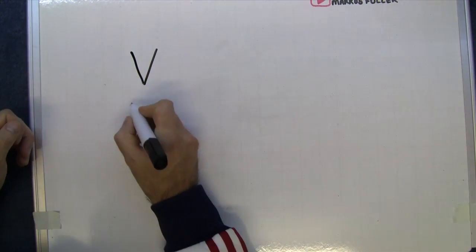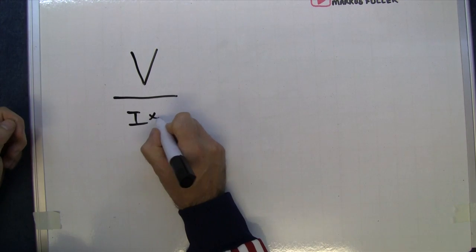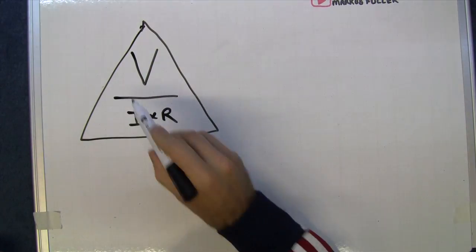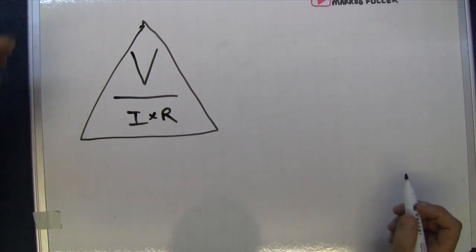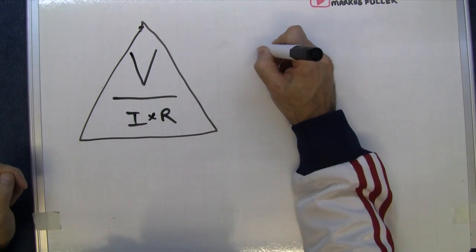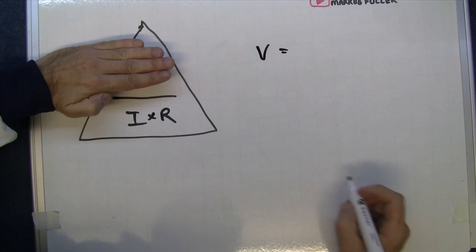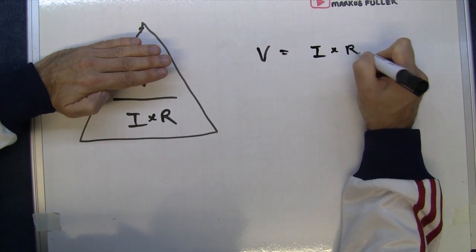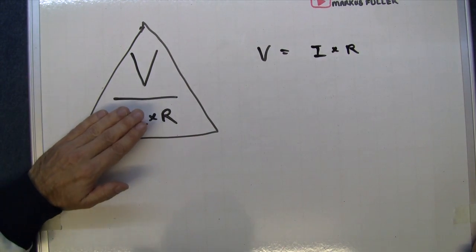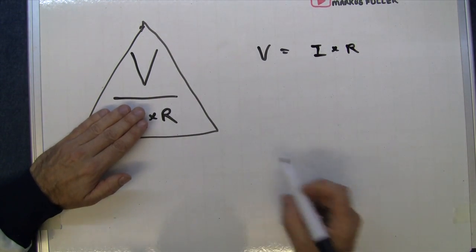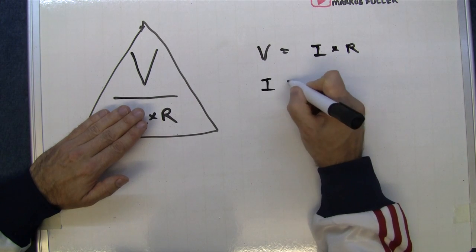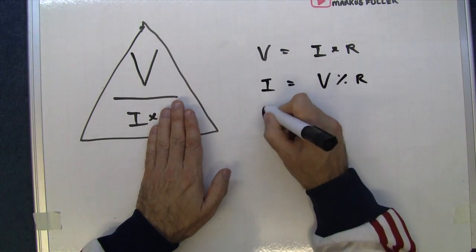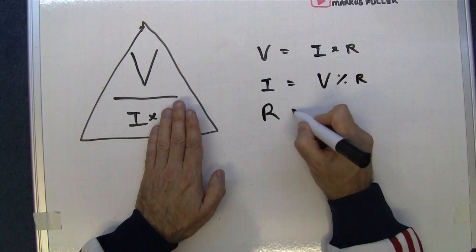Ohm's law is simply V = I × R. That's sometimes shown in a little triangle. If you want to find voltage, cover the voltage up and you're left with I times R — so voltage equals current times resistance. If you wanted to find the current, hide the current and it's voltage divided by resistance. And if you want to find the resistance, that's voltage divided by the current.